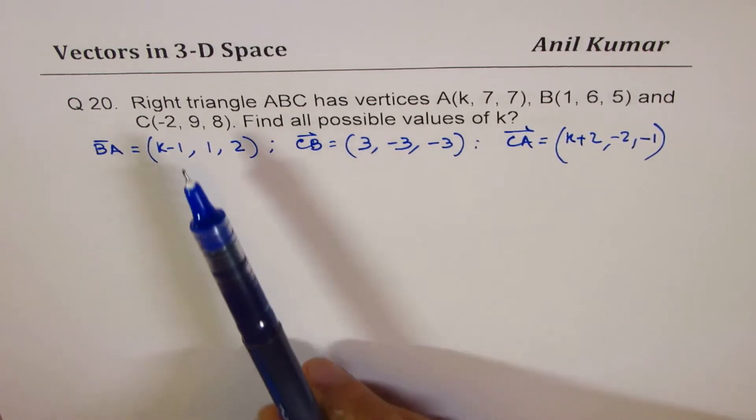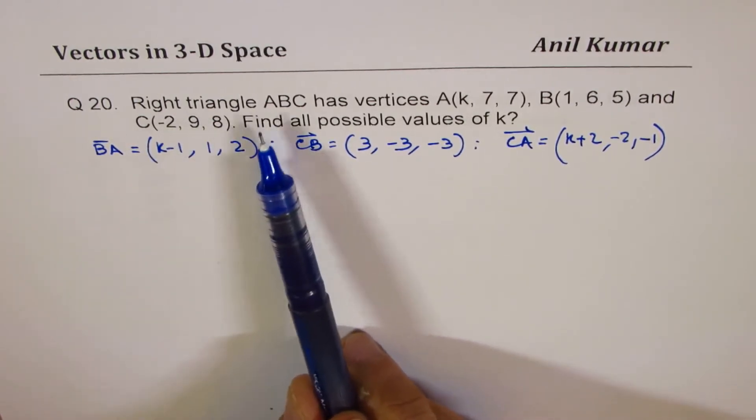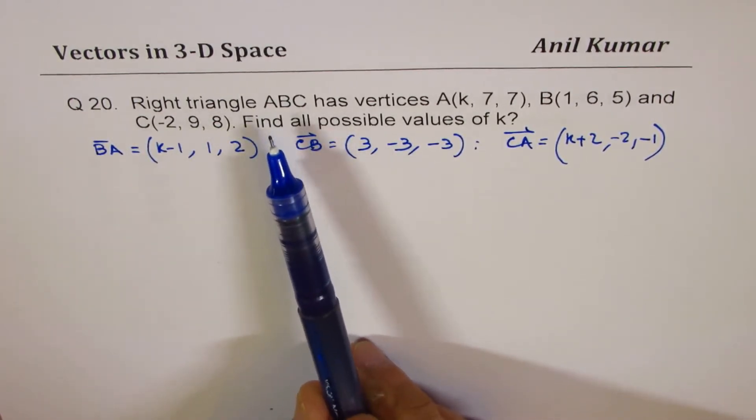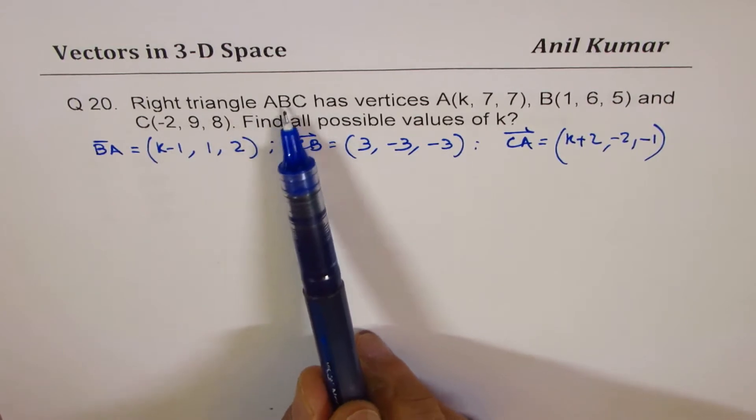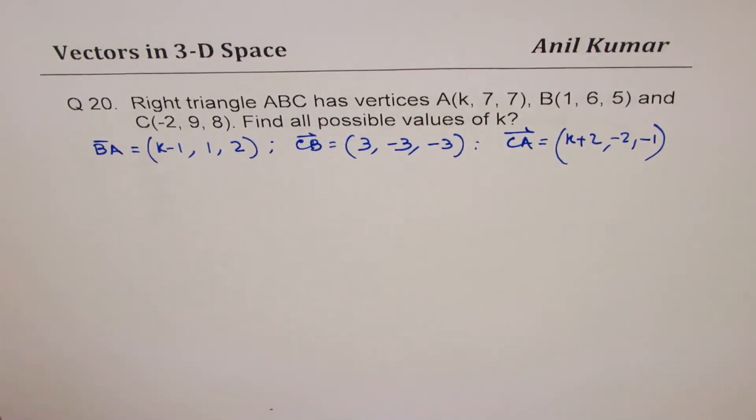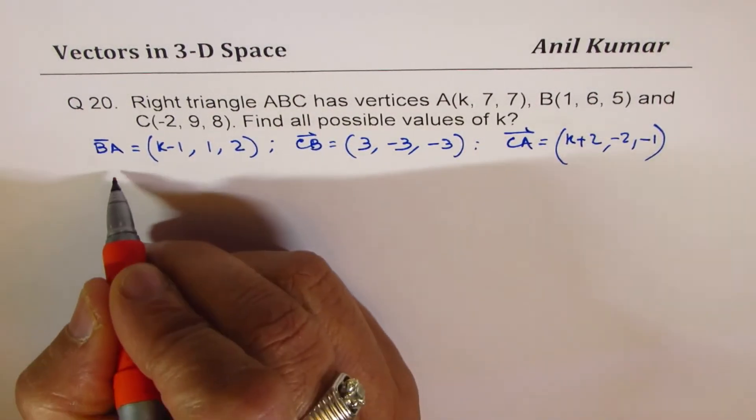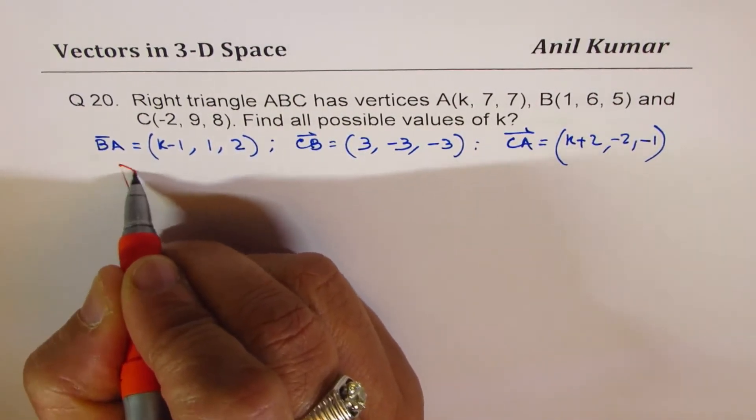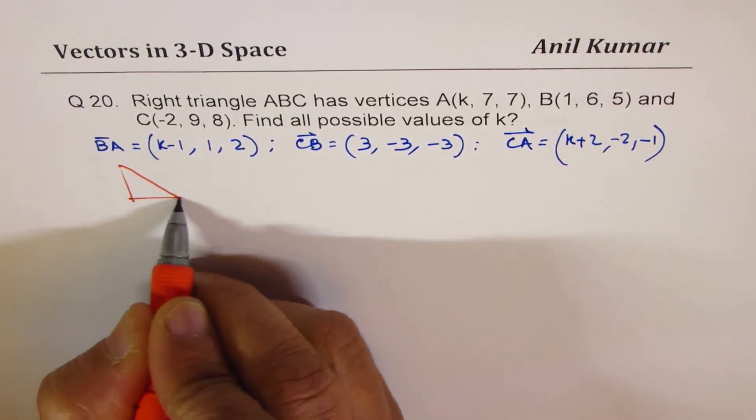Now we are saying that it is a right triangle. Important thing is we have not specified A, B, or C, which one of these is actually at 90 degrees. Now that is very critical to understand. So since that is open, in such questions we have to keep this option open.